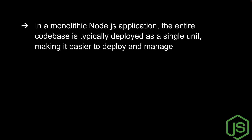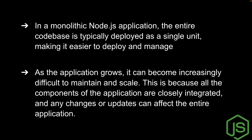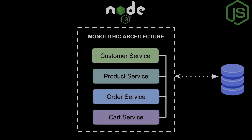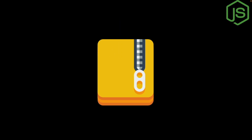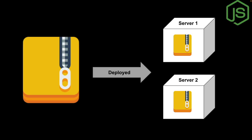In a monolithic application, the entire code base is typically deployed as a single unit. This makes it very easy to deploy and manage, but as the application grows it becomes increasingly difficult to maintain and scale, because all components are closely integrated and any changes or updates can affect the entire application. We create a zip file artifact of the whole application and deploy it across multiple servers.